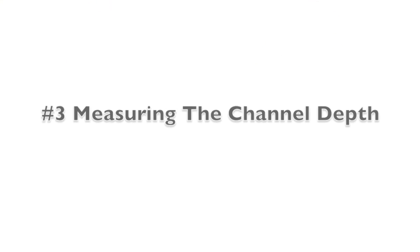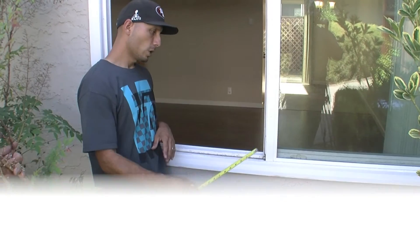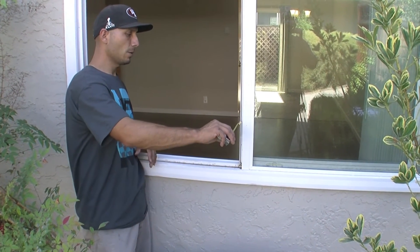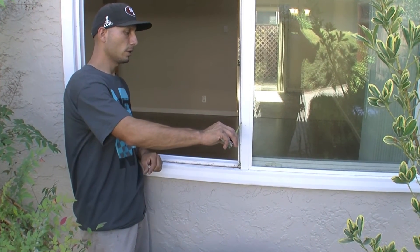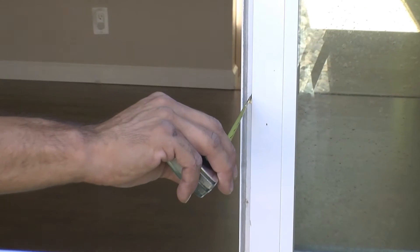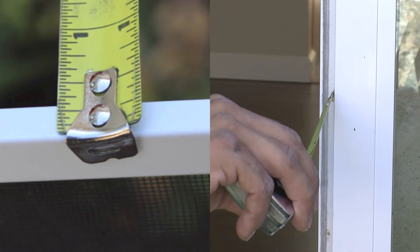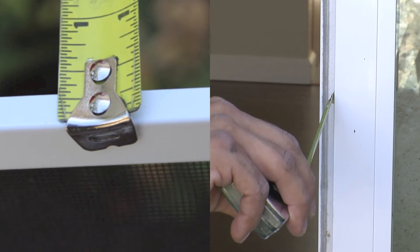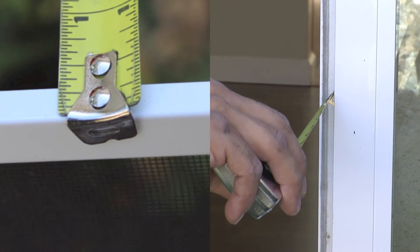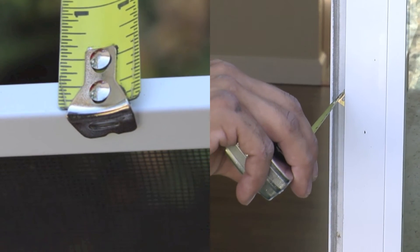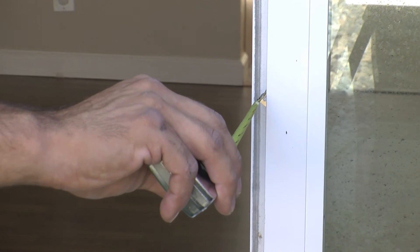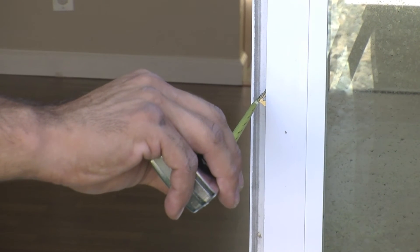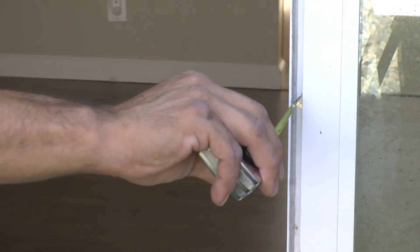One other important measurement is how thick the screen frame metal is — they vary from 5/16 to 3/8, up to 7/16; we even have quarter inch if it's that thin. The depth of the opening on the closed side: this one looks like it's 5/16, which is pretty common.